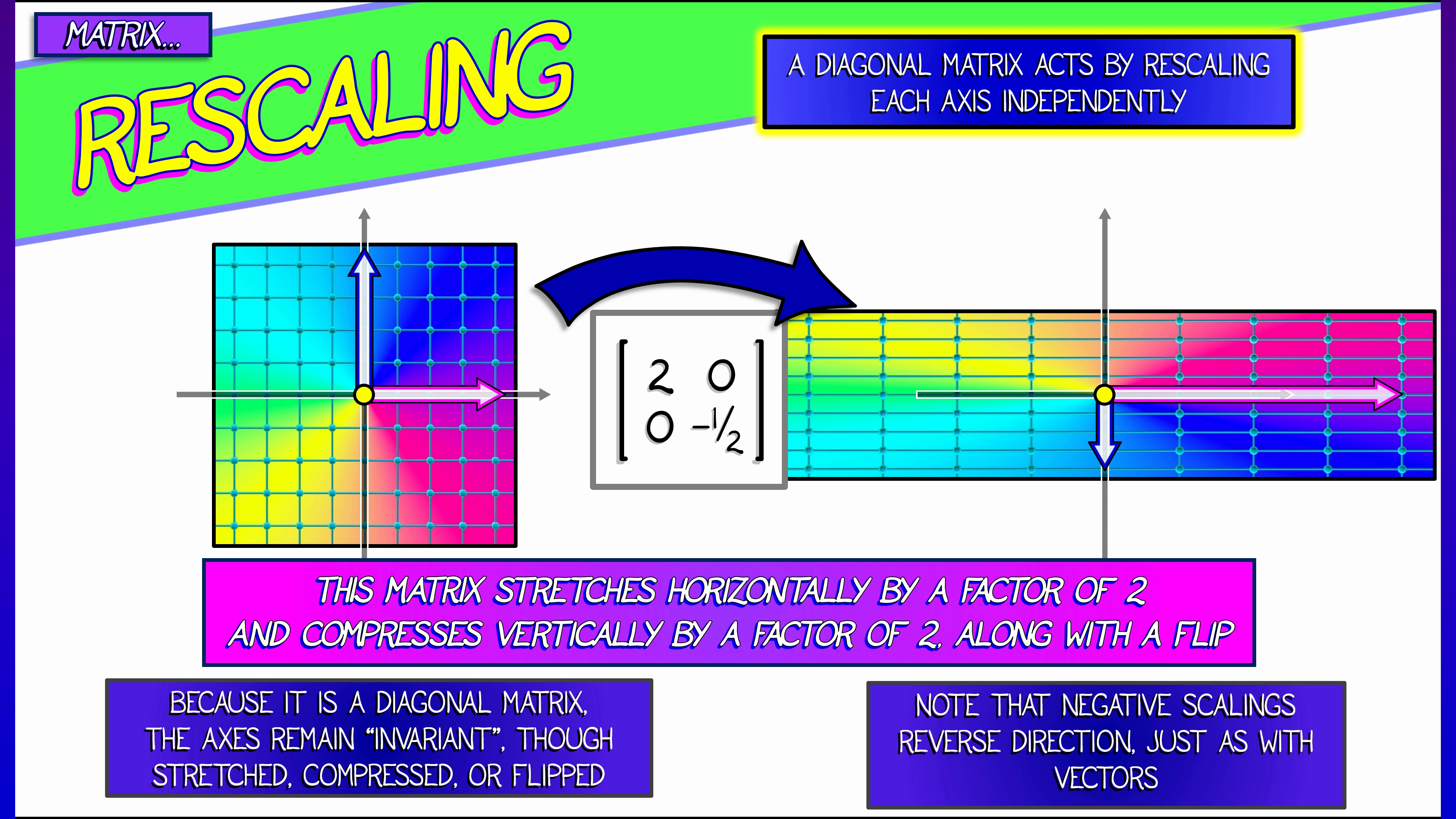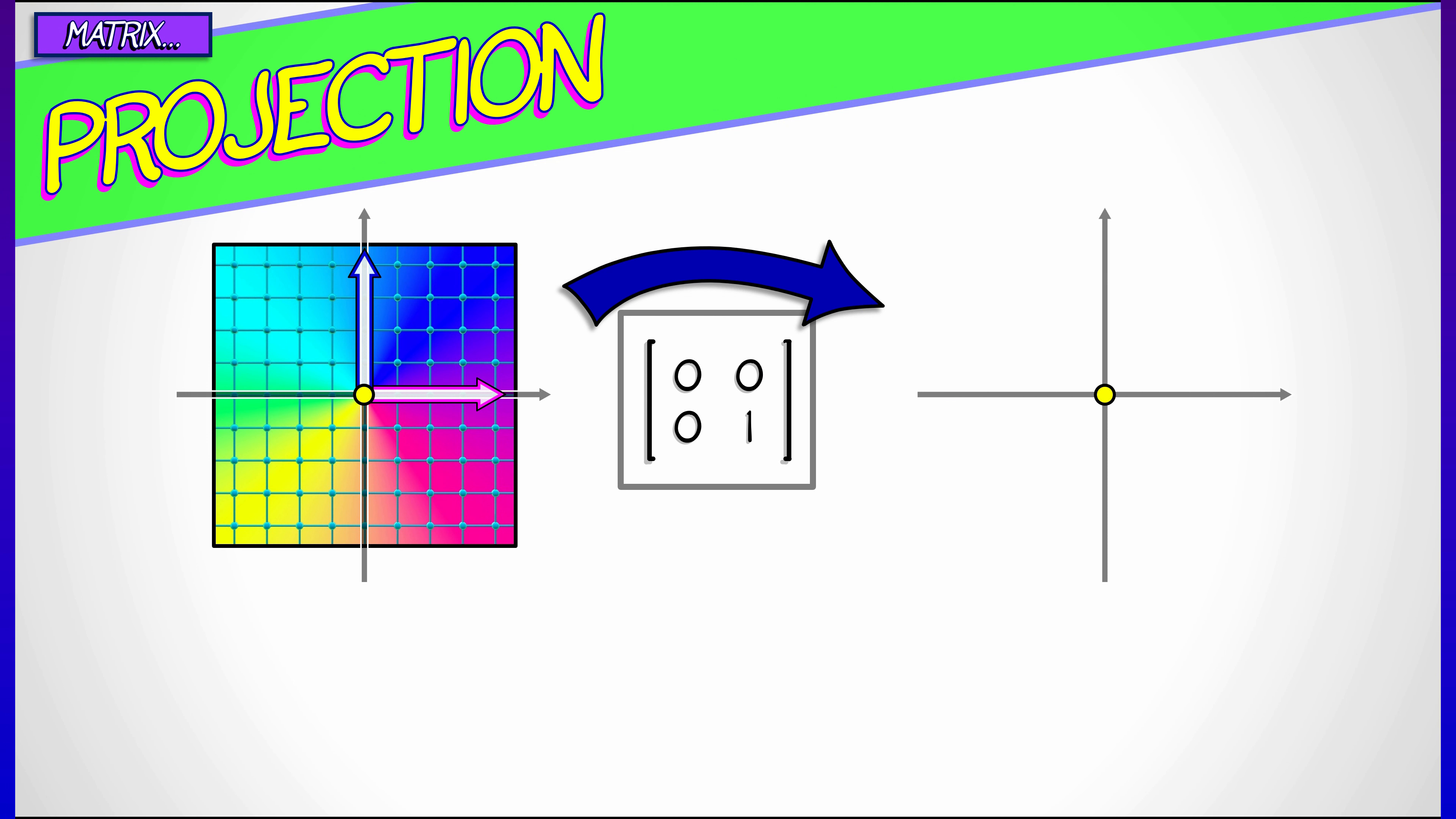Now, again, these diagonal matrices keep the x and y axes invariant. Watch out for minus signs because that winds up flipping the axis and then the rest of the plane over with it.